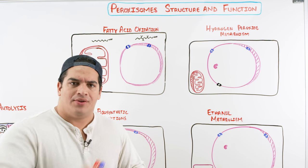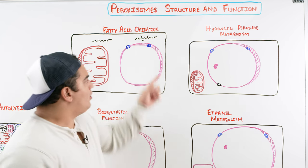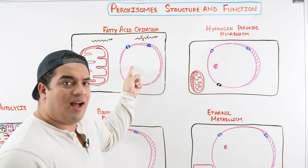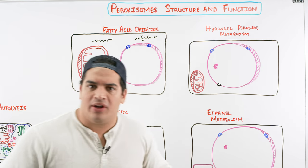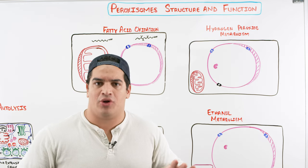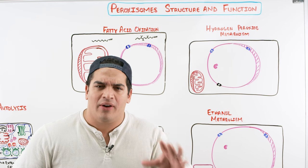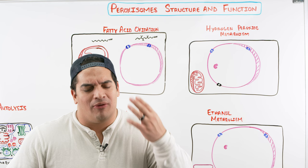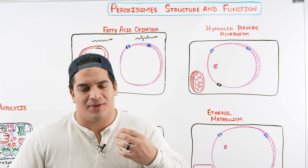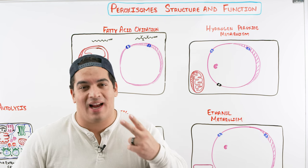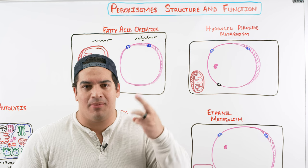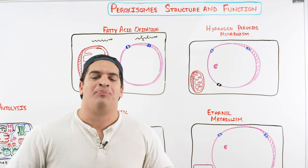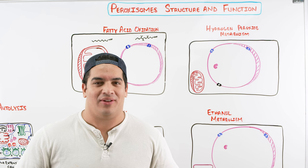Peroxisomes — really cool organelles. They're kind of a spherical membrane, so they have a membrane that encloses their actual contents inside of them. They have four particular functions: fatty acid oxidation, hydrogen peroxide metabolism, ethanol metabolism, and the biosynthetic function of particular lipids.